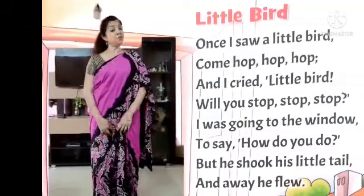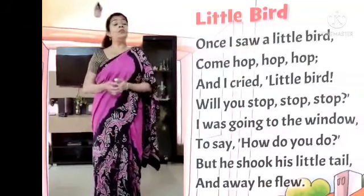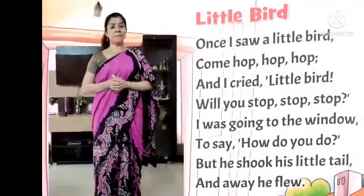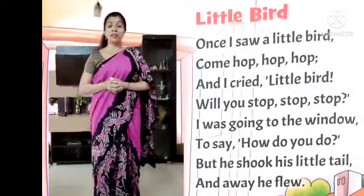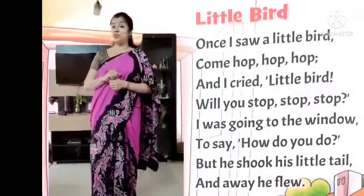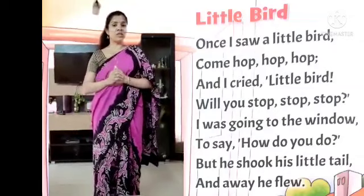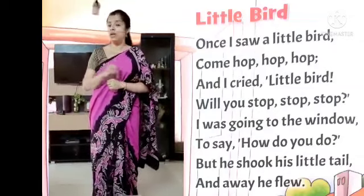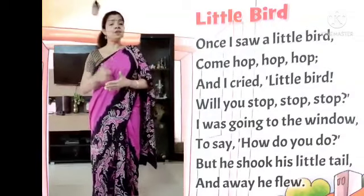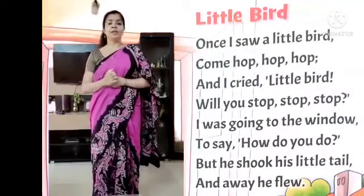Good morning children, hope you all are doing well. Today we are going to learn a new rhyme from the book Socio Quotient Step 3, page 24. The name of the rhyme is Little Bird. In this rhyme we are going to read about a little bird who used to come and sit in the windowsill, and whenever anybody used to come near it, it used to fly away. I will do the rhyme and you will do along with me. So let's begin.